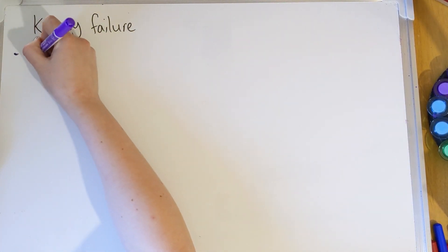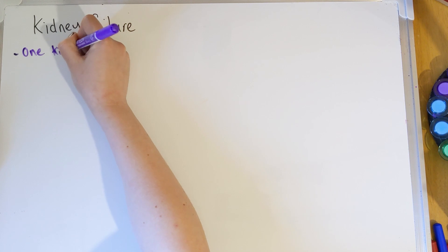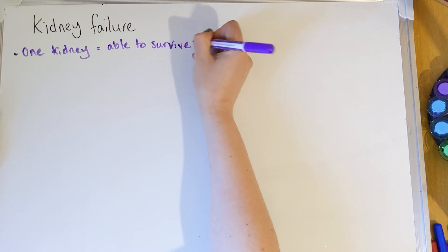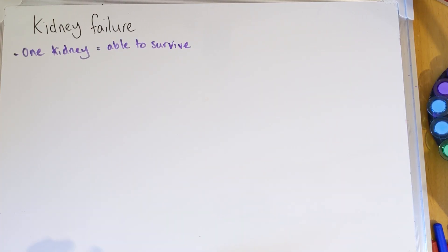You can have one kidney and survive, but if you lose function in both, the only real treatments are transplant or dialysis. Dialysis is usually a stop gap — between getting on the waiting list for a new kidney, or if someone can't or doesn't want surgery. We're going to look at both types so that in an exam you can evaluate one versus the other. We'll start off by looking at transplants.